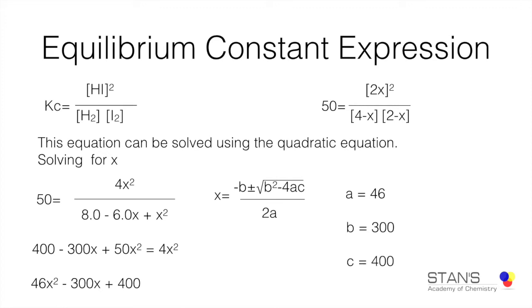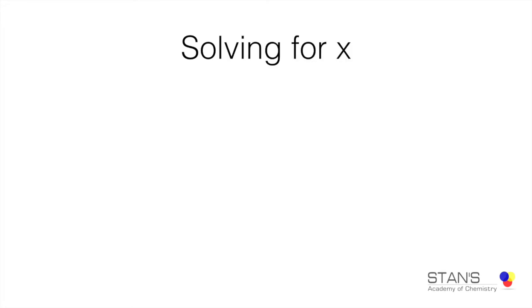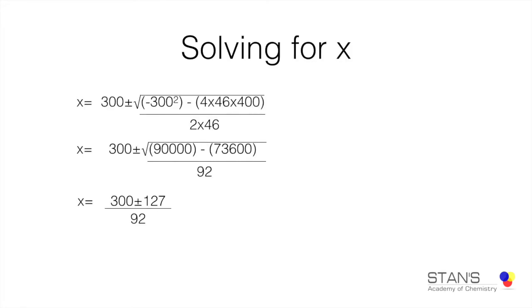Here A = 46, B = 300, and C = 400. Substituting these values gives two solutions: X = 4.7 and X = 1.9. Since we started with only 4 moles of hydrogen, it is impossible for 4.7 moles to react — you cannot remove more moles than you started with. Therefore, the value X = 4.7 is not acceptable.